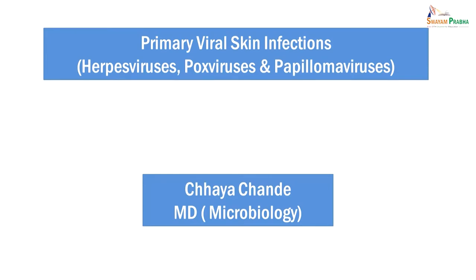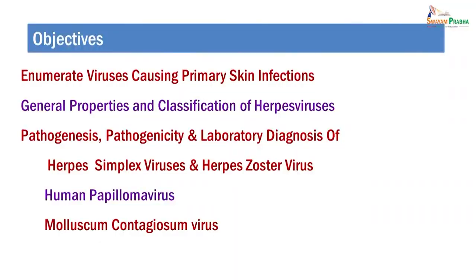Welcome to this session on primary viral skin infections. There are a large number of viruses which can cause skin or cutaneous manifestations. However, only a small fraction of viruses causing infections in human beings are capable of causing primary skin infections. The objectives for this session are: you will be able to enumerate viruses causing primary skin infections, describe general properties and classification of herpes viruses, and describe pathogenesis, pathogenicity, and laboratory diagnosis of herpes simplex viruses, herpes zoster virus, human papilloma viruses, and molluscum contagiosum virus.